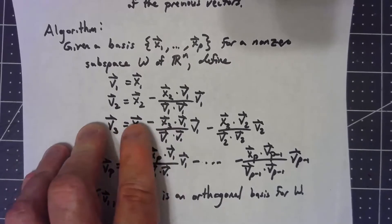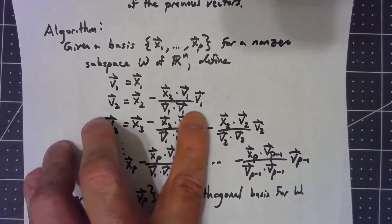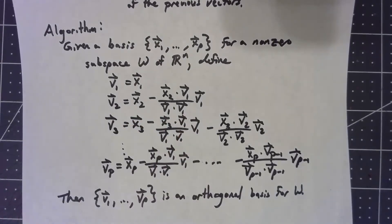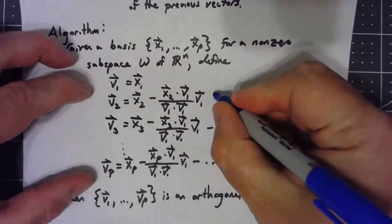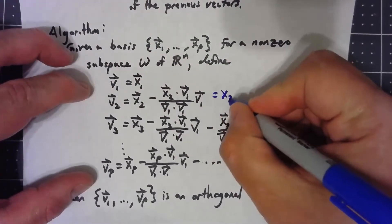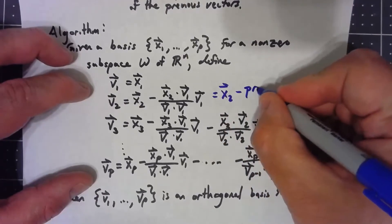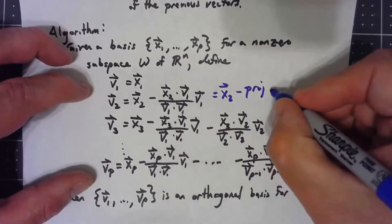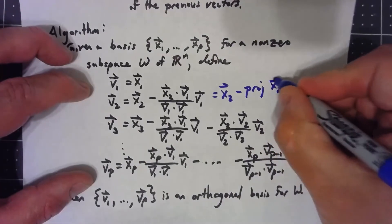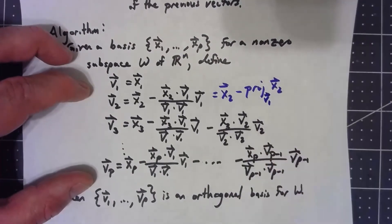This next one I've got the formula written out v2 equals x2 minus x2 dot v. But honestly, a good way to think about this is we're taking the second vector minus the projection of x2 onto the previous v1.